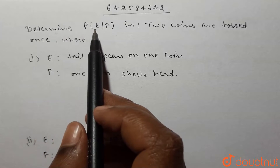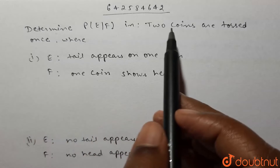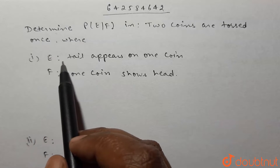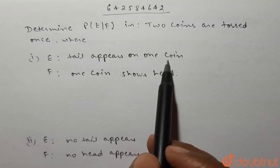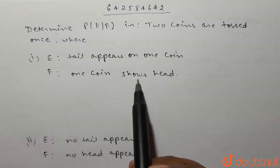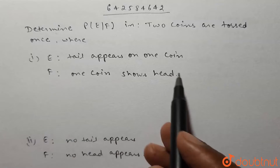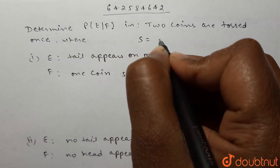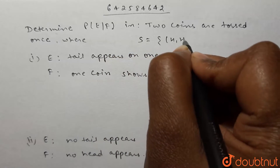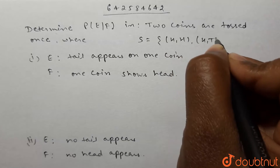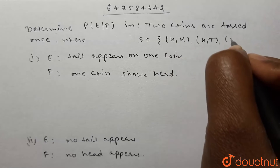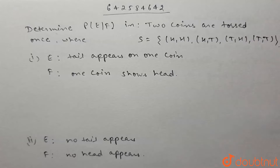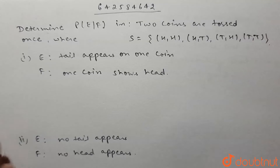Determine the probability of E given F, where two coins are tossed once. Event E is: tail appears on one coin, and event F is: one coin shows heads. The sample space will be: {head,head}, {head,tail}, {tail,head}, and {tail,tail}.